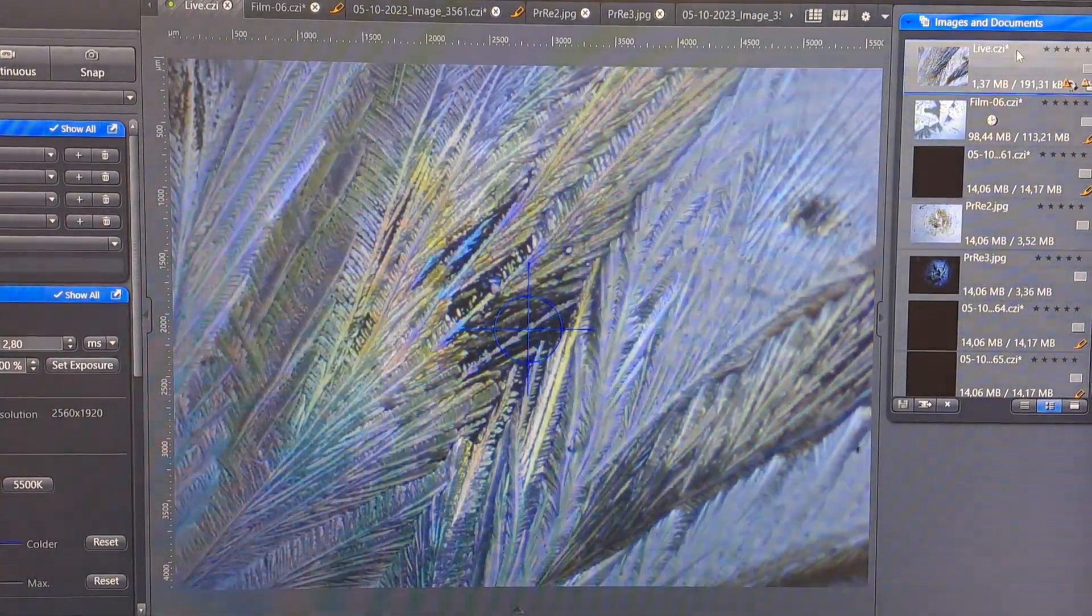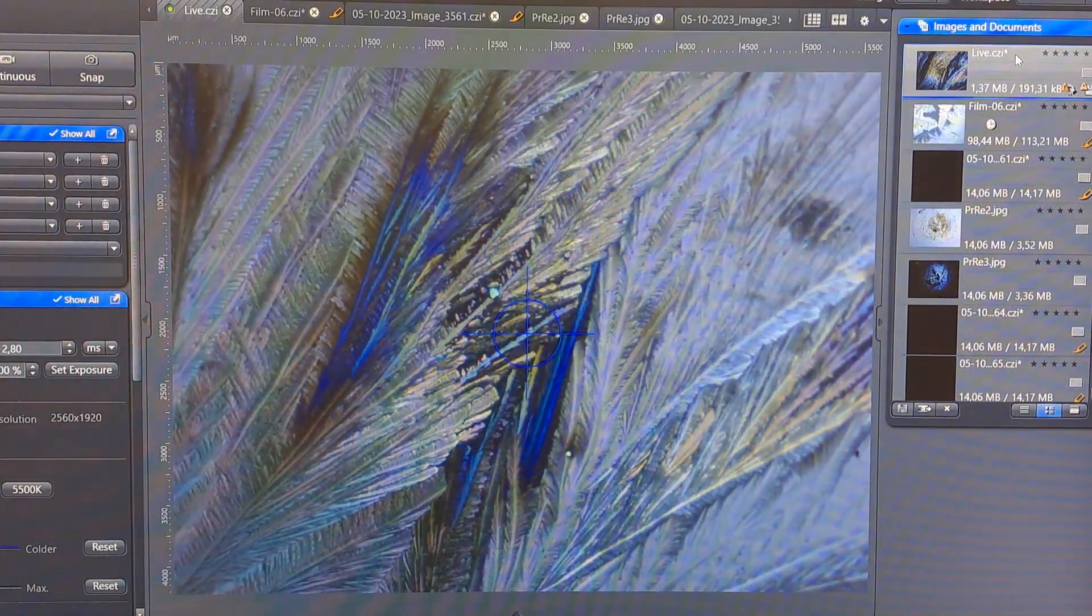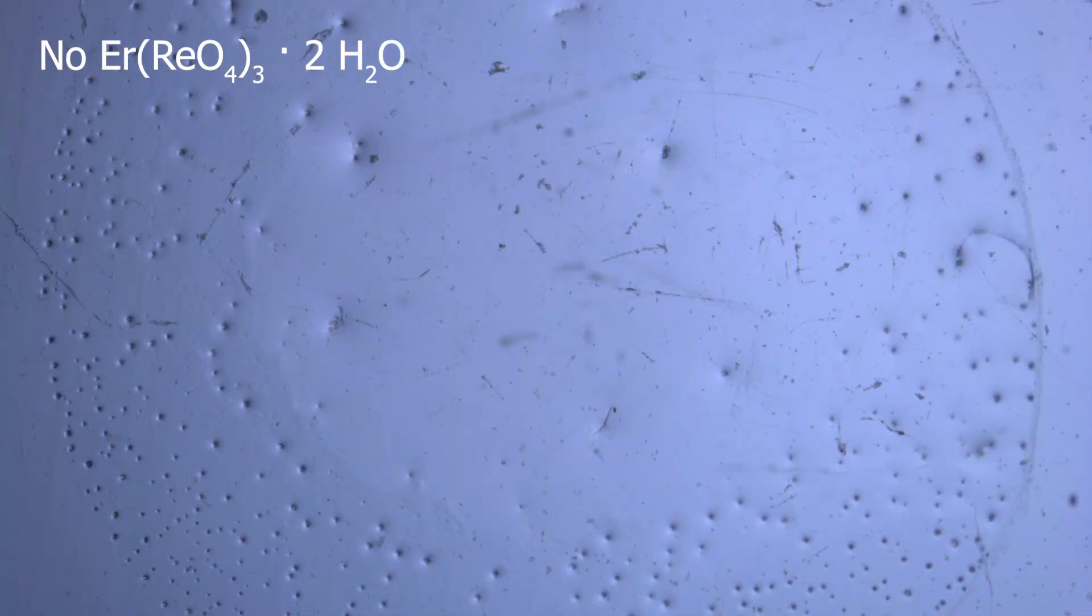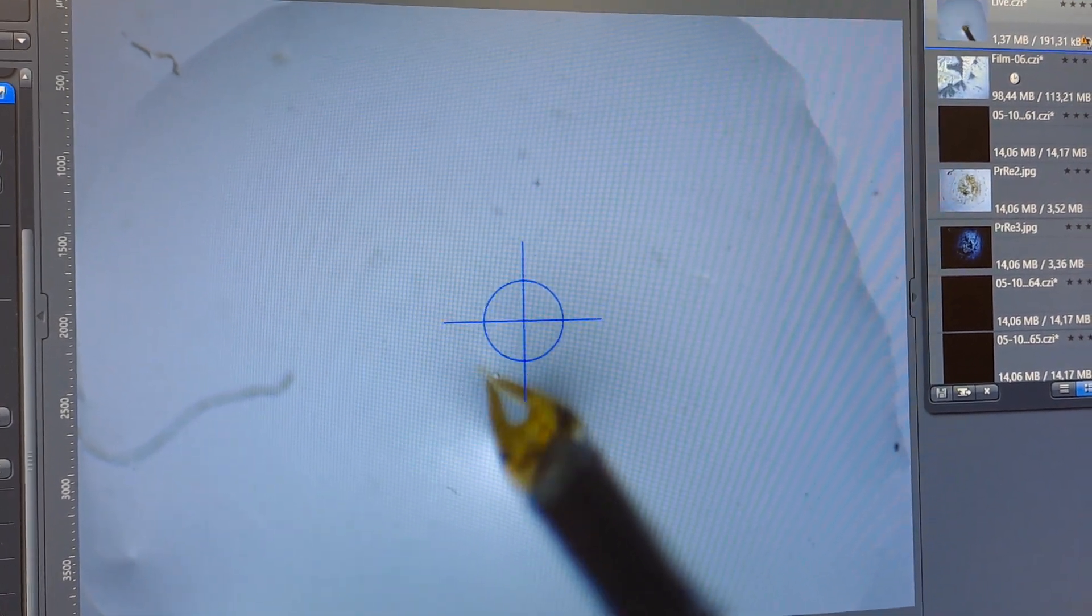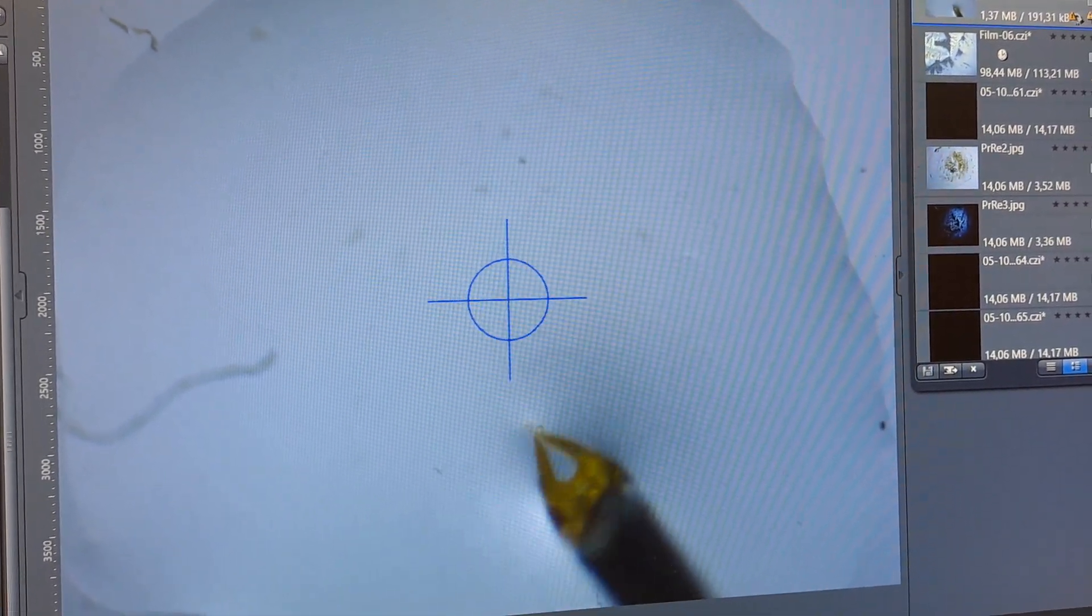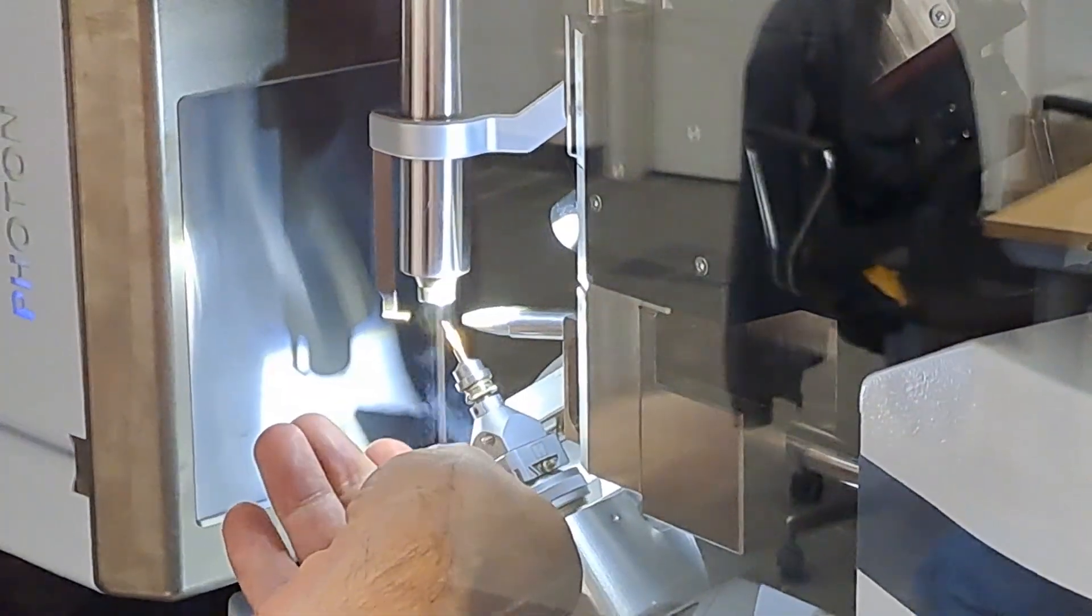The attentive among you may have noticed that I now included praseodymium and neodymium and erbium was missing. Here's a picture of the erbium, unfortunately it hasn't crystallized by the day of measurement and the praseodymium actually had the research background that we really wanted to determine the crystal structure with the XRD because no one has done that before us. So how does a measurement work?